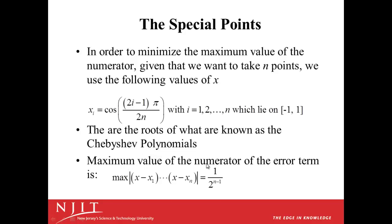The maximum value of the numerator of the error term for Lagrange polynomial interpolation, using these special points for x, turns out to be 1 over 2 to the n minus 1. So in the case where we took 11 points, the tenth degree polynomial, the maximum value of that numerator would be 1 divided by 2 to the 11 minus 1, 1 over 2 to the tenth, or about 1 in 1,000.